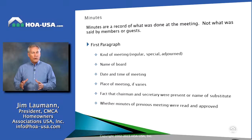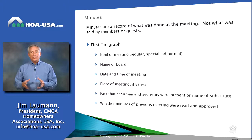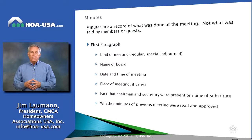The minutes are a record of what was done at the meeting, not what was said, so they should be brief. In the first paragraph, they should address the kind of meeting being held — whether it is a regular meeting, a special meeting, or a re-adjourned meeting — the legal incorporated name of the association, the date and time of the meeting, where the meeting is held if that varies from month to month, the fact that the chairman and the secretary were present and if not who was substituting, and whether or not the minutes of the previous meeting were read and approved.